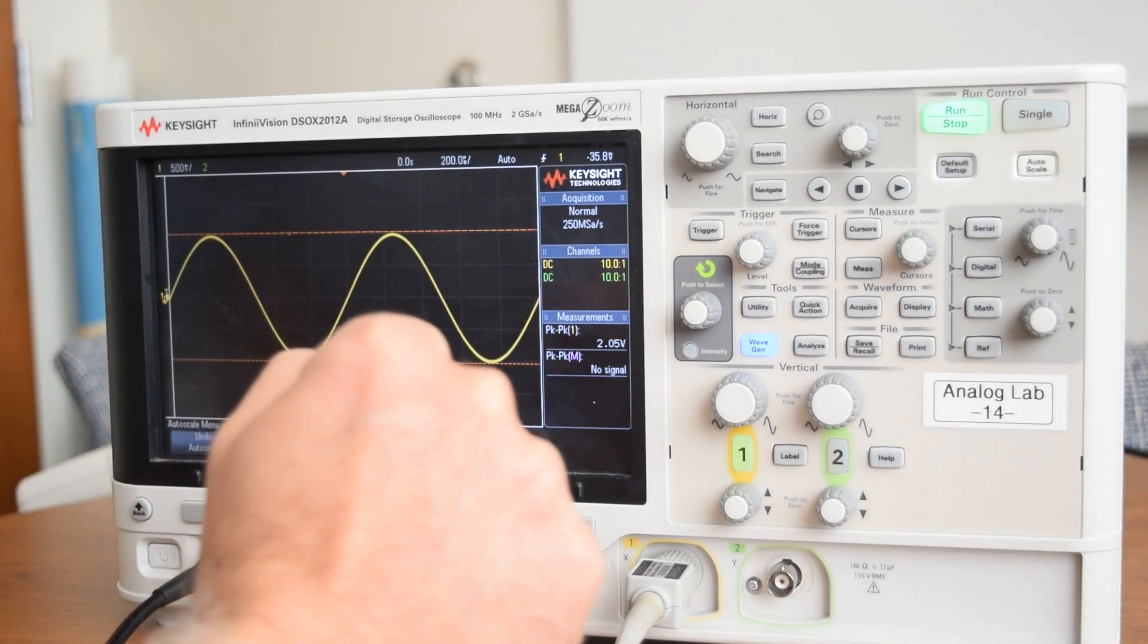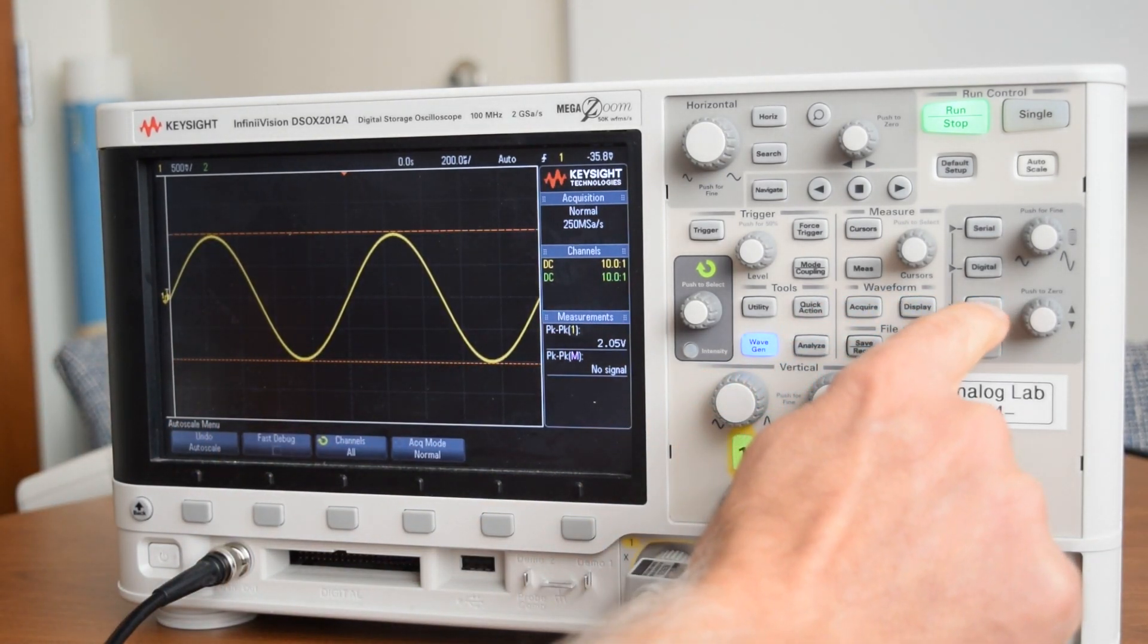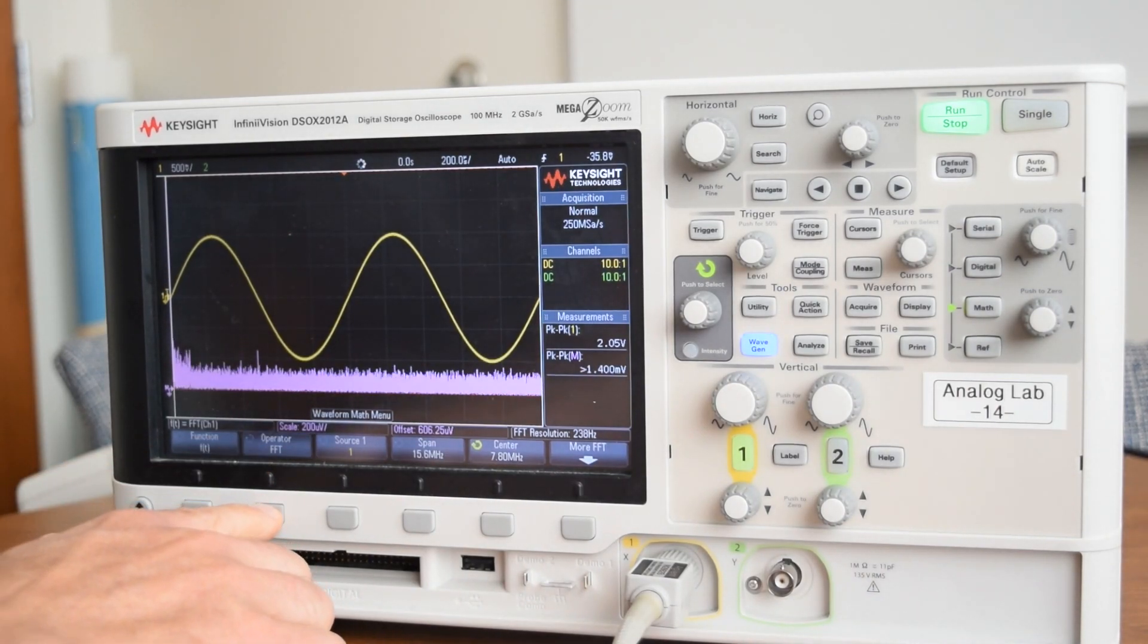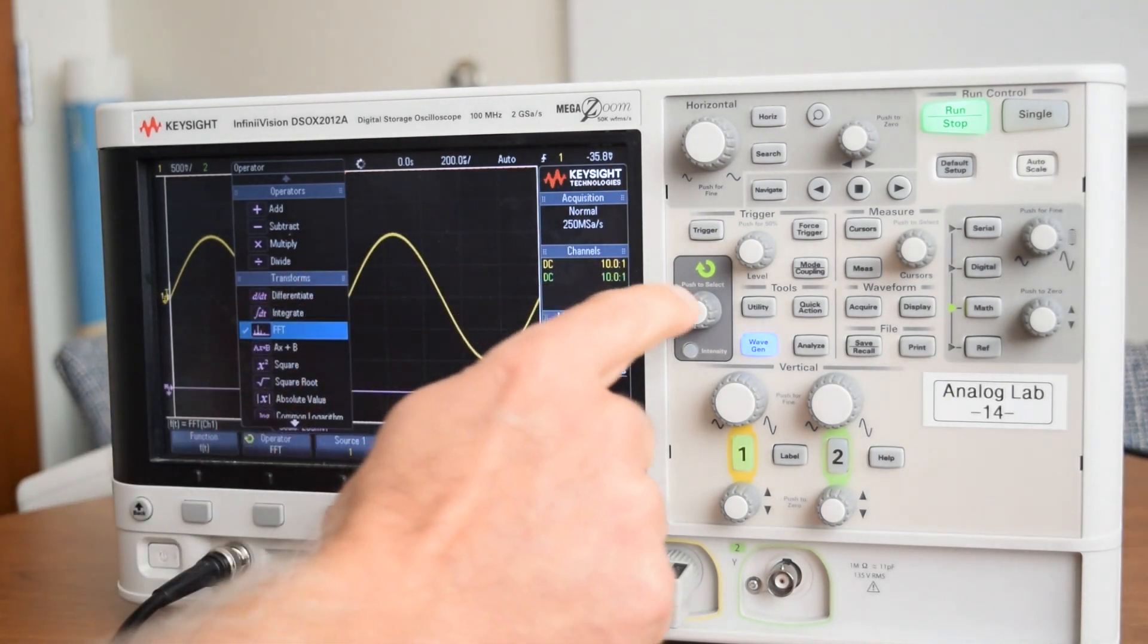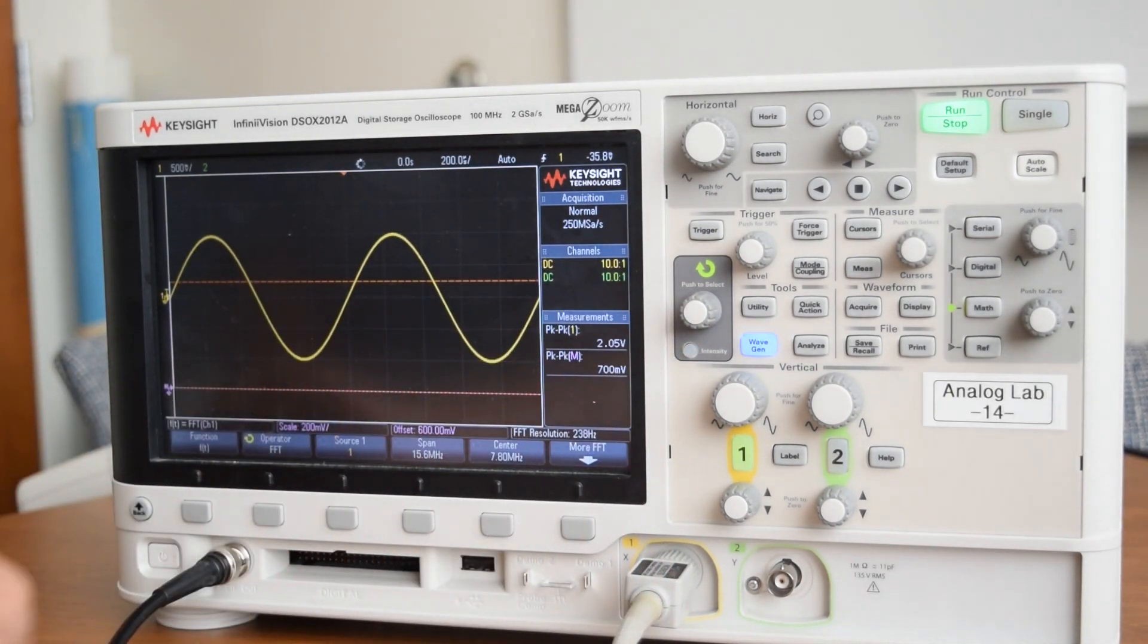So what we're going to do is we want to do the FFT, so we're going to come over here and click math. We're going to do the operator right here, and you change this, and we want to put it on FFT, and then you push the button to select it.